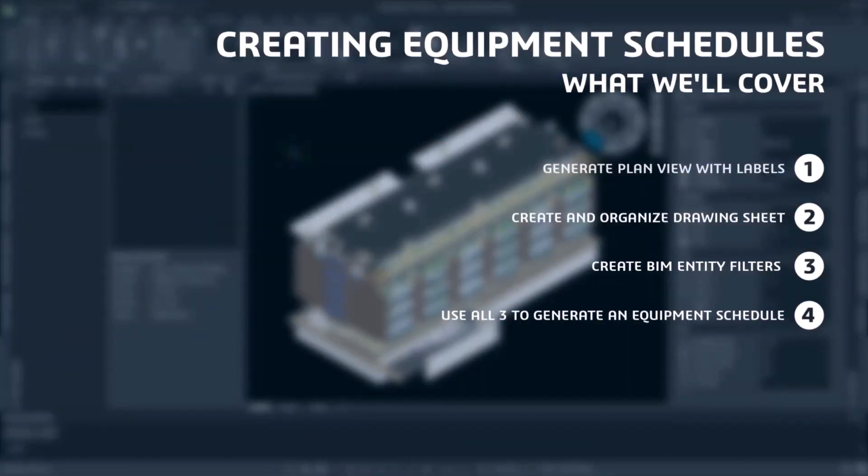We'll generate a couple of plan views and label all of the doors in those plan views. Then we'll organize our sheet space and place our plan view in it. After that, we'll create and apply BIM Entity Filters, and to finish it off, we'll generate our door schedule for specific floors. Just to give a heads up, we're going to start off with a blank file, so the first three steps will act as more of a setup for the creation of the schedule.